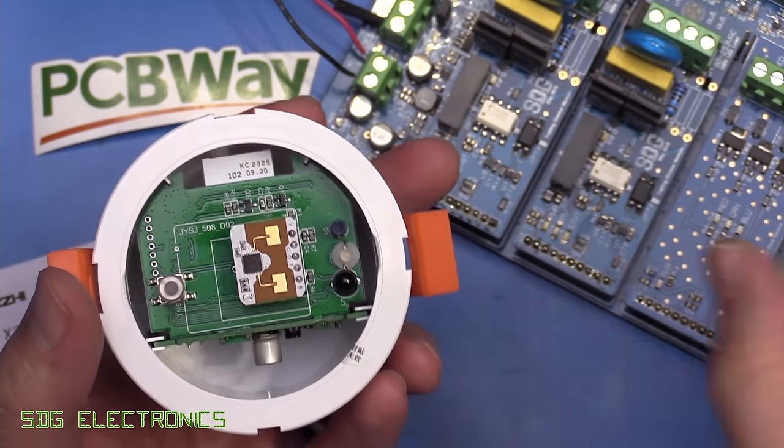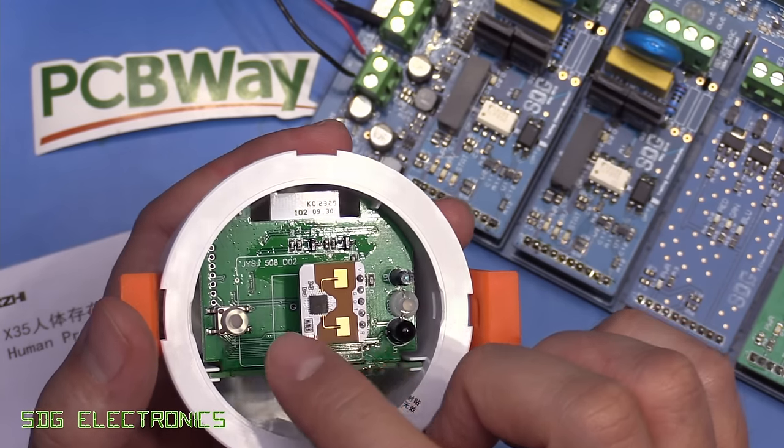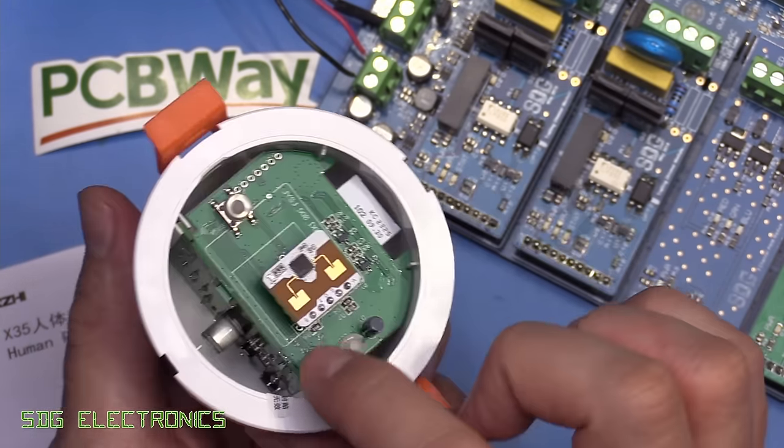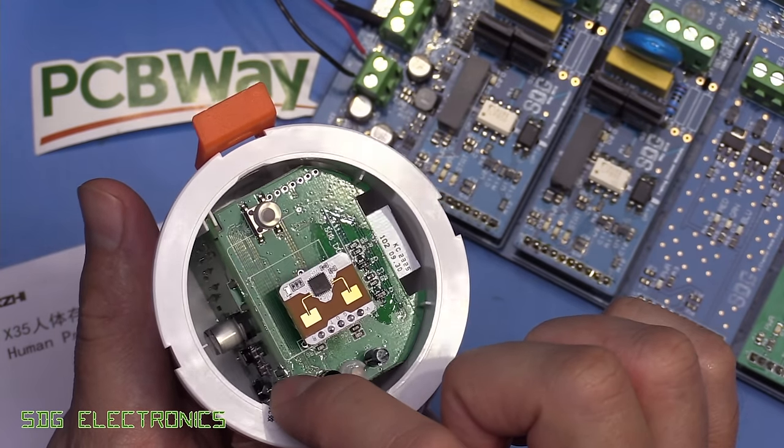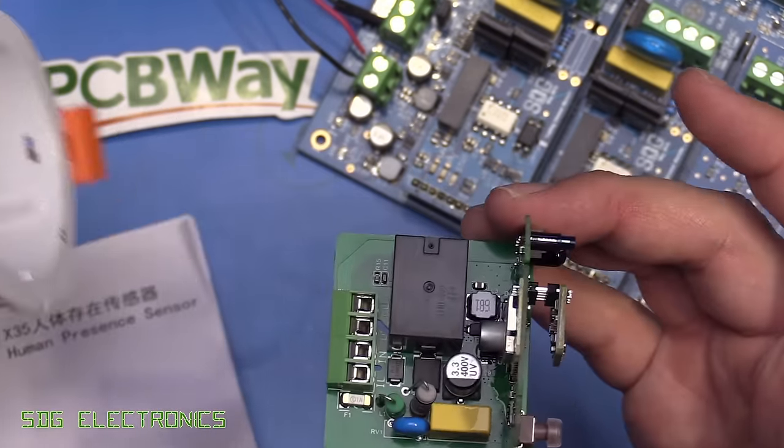Let's grab a screwdriver. And there we go, that's looking pretty promising. We've got the radar module at the front, a PCB, and I think that looks like the Zigbee module behind it, then a board going the other way which looks to have power supply stuff. This just slides out.